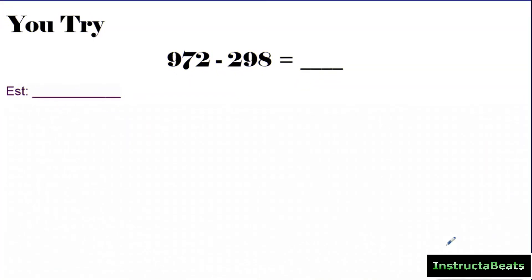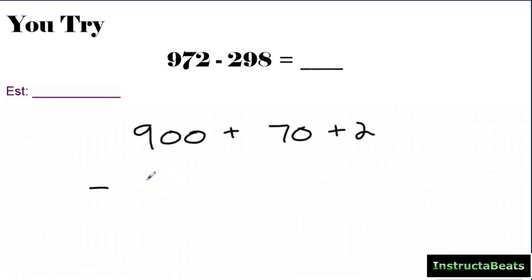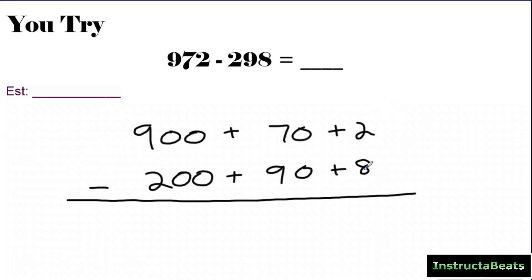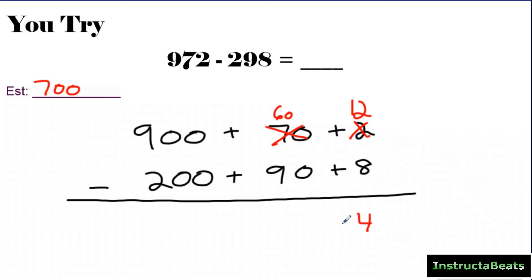Let's try a You Try problem. Pause the video, try this using expanded form and the steps we've talked about, then push play to check your understanding. Hopefully you paused it and now you're checking your answer. We're going to do 900 plus 70 plus 2, subtracting 200 plus 90 plus 8. My estimate: rounding to 1,000 minus 300 is around 700. Starting with the ones place: 2 minus 8 — more on the floor, go next door and get 10 more. This becomes a 60, and the 2 becomes a 12. 12 minus 8 is 4.